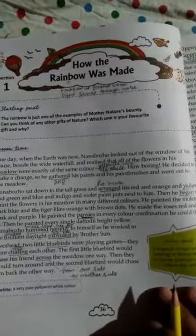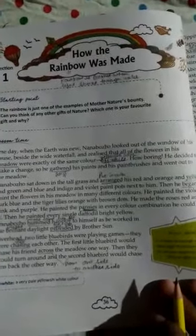After that, the daffodil bright yellow means shiny yellow color. Hummed means make sound like bees.